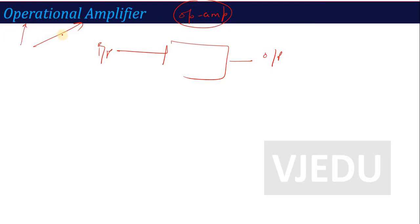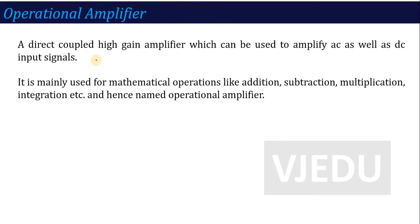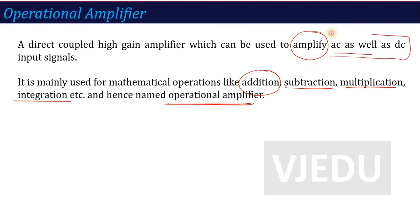Now there is another word: 'Operational'. Here, operational means it is a device that will perform amplification along with some mathematical operations, like addition, subtraction, multiplication, and integration. Hence it is called Operational Amplifier. It is an amplifier that will amplify AC as well as DC supply — you can amplify both types of input signals. And with amplification, it also performs mathematical operations.